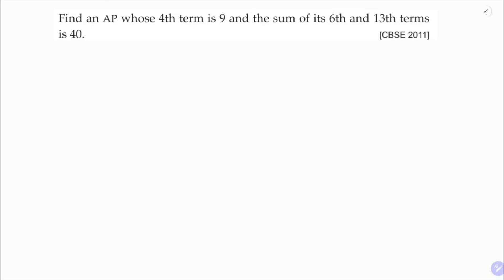Find an AP whose 4th term is 9 and sum of its 6th and 13th term is 40. So here 4th term of an AP is given like 4th term is 9 and the sum of its 6th term, sum of 6th term and 13th term, 6th term and 13th term is 40.